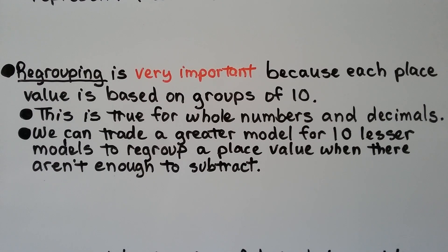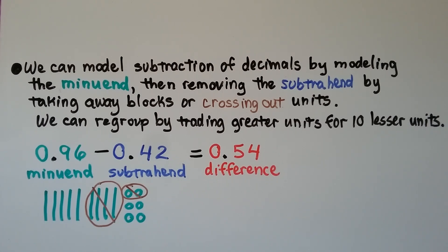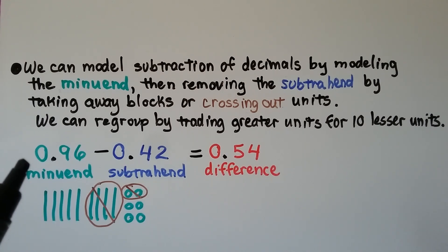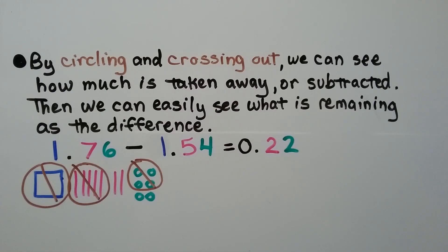Regrouping is very important because each place value is based on groups of ten. This is true for whole numbers and decimals. We can trade a greater model for ten lesser models to regroup a place value when there aren't enough to subtract. We model subtraction by representing the minuend, then removing the subtrahend by taking away blocks or crossing out units. We can regroup by trading greater units for ten lesser units, and the remaining amount is the difference.